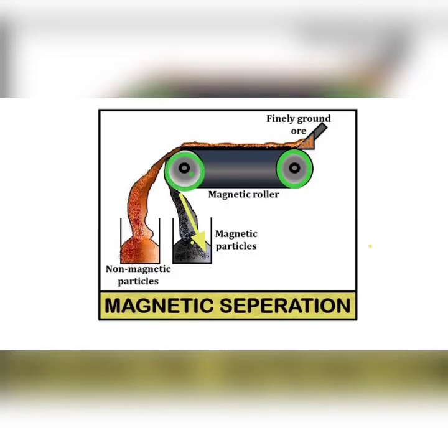Magnetic separation. We use magnetic roller and conveyor belt. We pour the finely powdered ores on conveyor belt. Now, the ores moves on. The substance which has magnetic property, they are attracted.